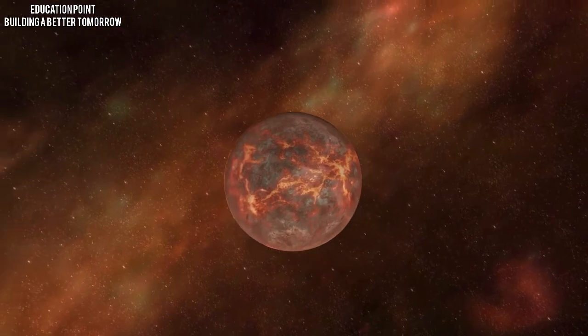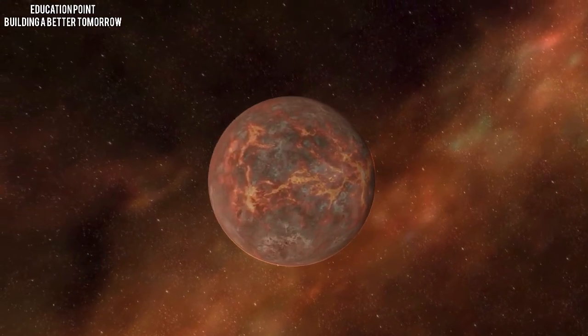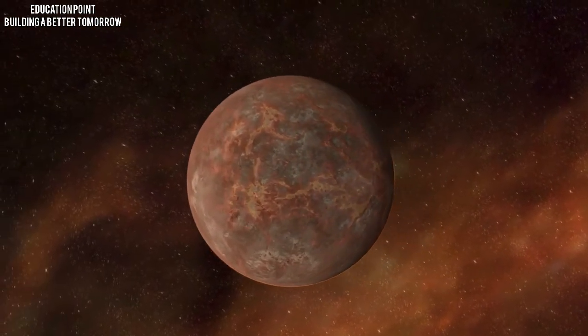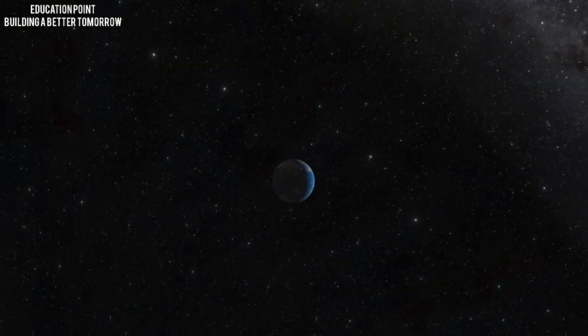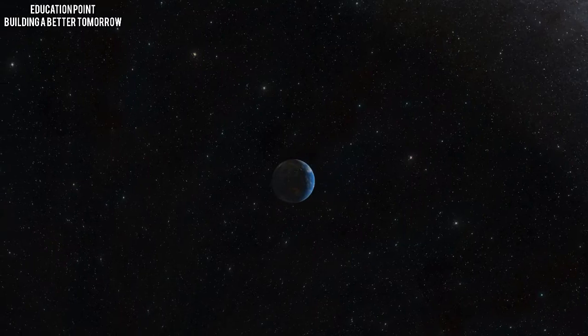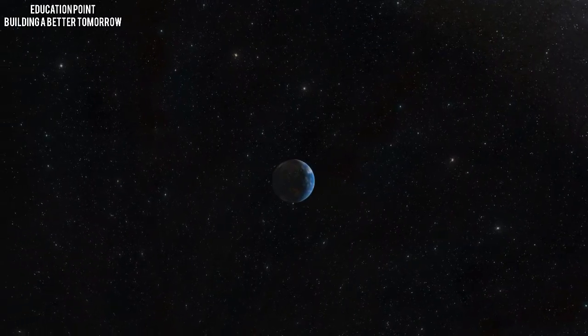Secondly, the Moon gradually receded from the Earth, cooled down, and then became geologically inactive. Currently, the average distance of the Moon from the Earth is 384,000 kilometers.